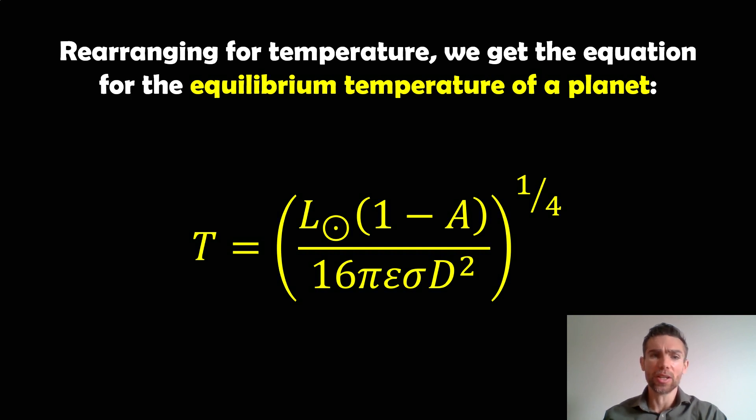we can find an equation for this equilibrium temperature of the planet. If we rearrange for T, we end up with this expression, and this gives us our equilibrium temperature of a planet. For the solar system, we need the luminosity of the Sun, the albedo of the planet (how reflective it is), its distance from the Sun, and then we can actually work out a temperature.